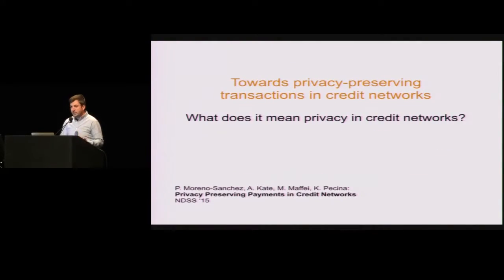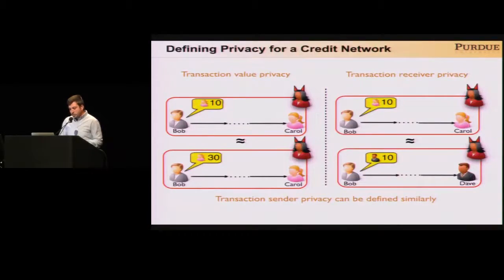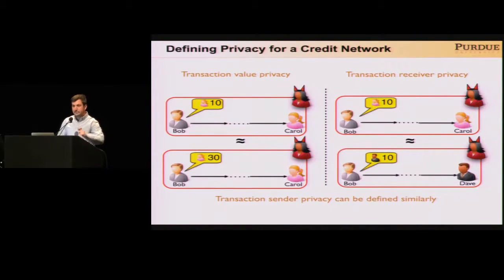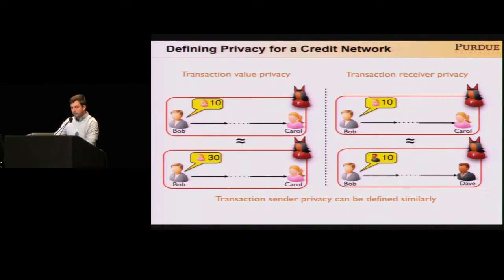From our side, we started by asking: what is the concept of privacy in a credit network? In our paper we defined two notions of privacy. The first is transaction value privacy — an attacker should not be able to determine the actual transacted value between two honest users. The second is transaction receiver privacy — an attacker should not be able to determine the actual receiver of a transaction, given a fixed sender and transacted amount. Transaction sender privacy can be defined similarly. We have formalized these properties as cryptographic games — all details are in the paper.